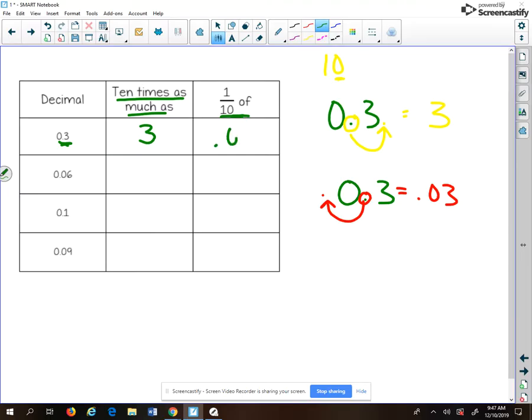So 3 tenths, 10 times as much as that is the number 3, the whole number, and one-tenth of that is 3 hundredths.